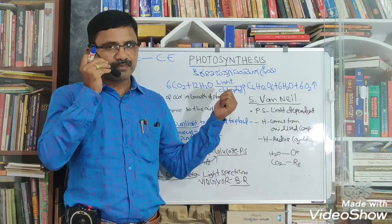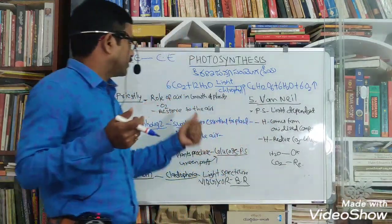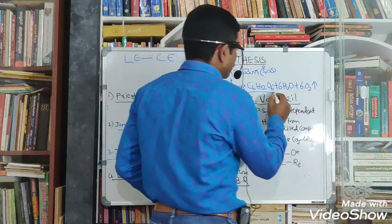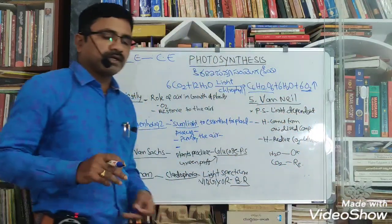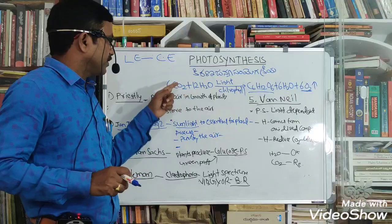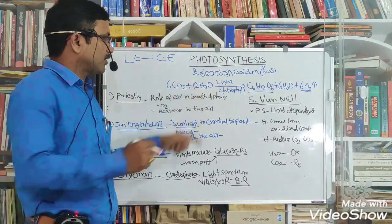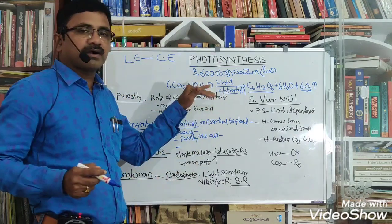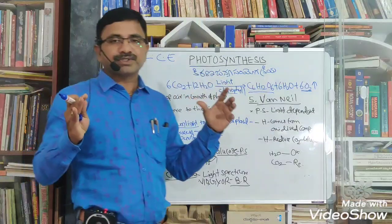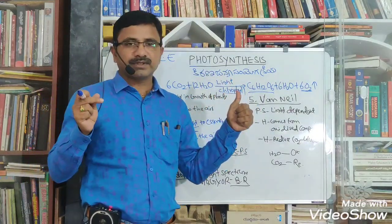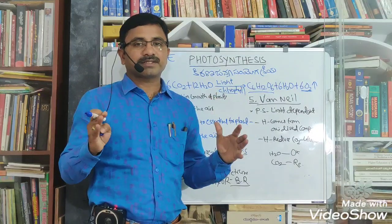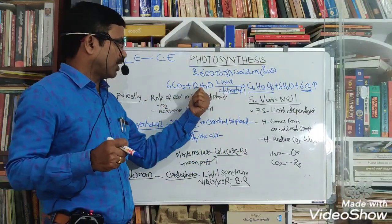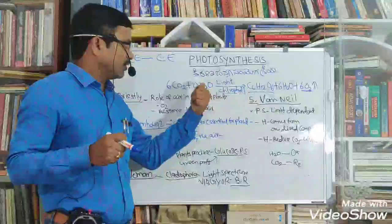In photosynthesis, the reactions involve carbon dioxide and water as inputs, and the products are glucose and oxygen. Photosynthesis requires carbon dioxide, water, light, and chlorophyll.